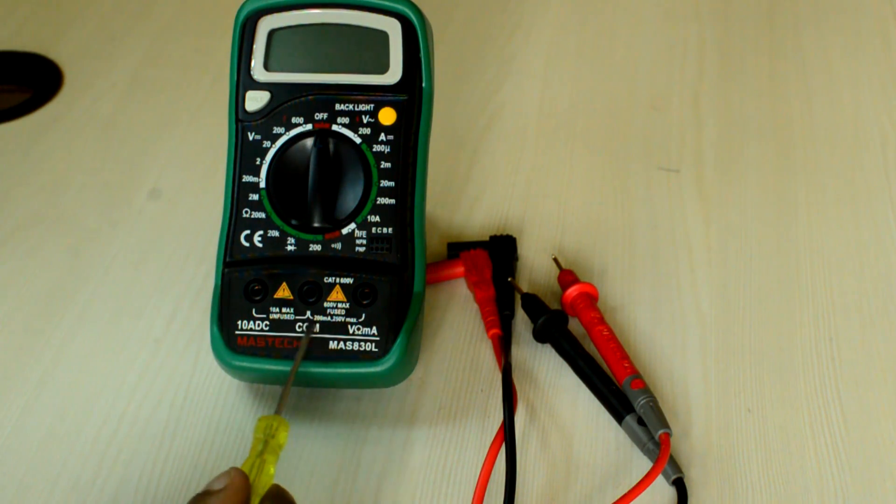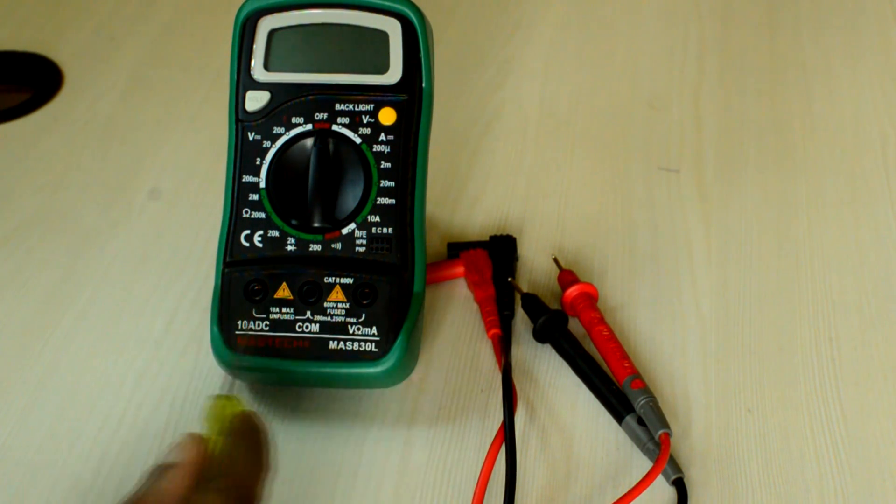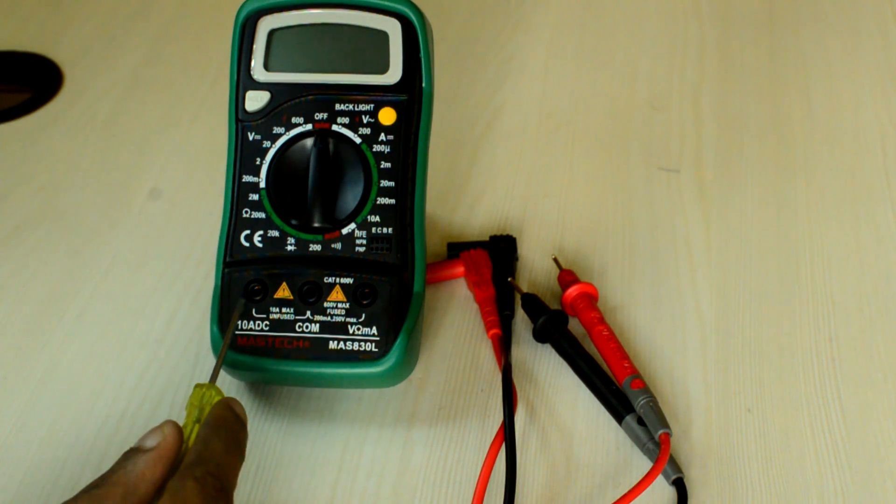The black cable should always be connected to the common terminal. The red cable should be connected to the right terminal if you want to measure voltage, resistance or mA of current. The red cable must be connected to the left if we want to measure up to 10A of current.